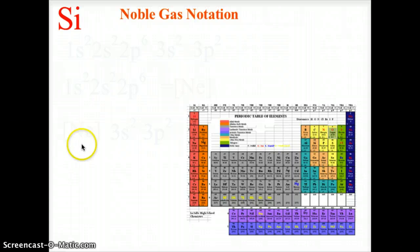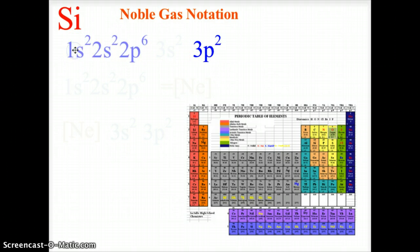Let's look at the noble gas notation for silicon. Silicon is in the third row, second column of the p block, so we are dealing with a 3p2 ending to the electron configuration of 1s2 2s2 2p6 3s2 3p2.